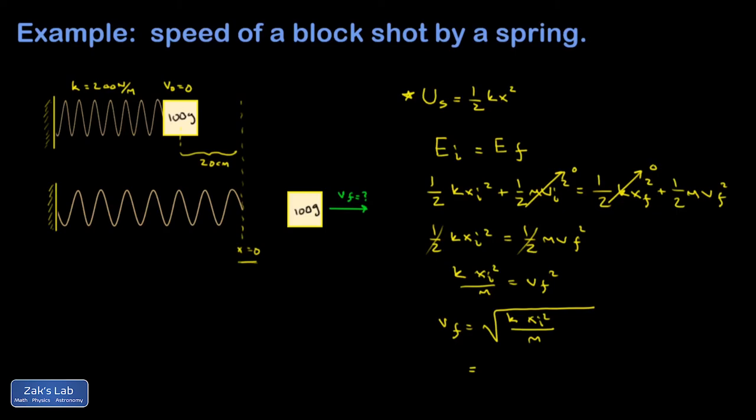One thing I wanted to point out: we probably should say x initial is a negative number, negative 20 centimeters, because it's to the left of the equilibrium position. But when we're calculating energy, we're always going to square it, so it doesn't matter. I'm going to get a positive energy out of it.